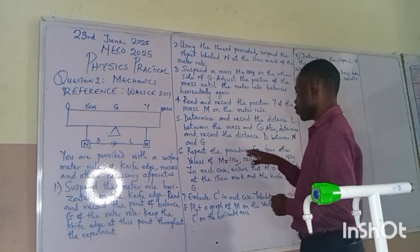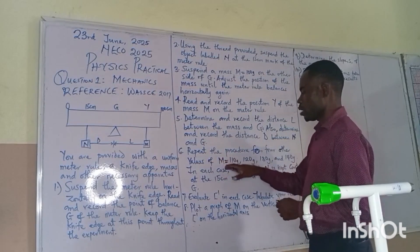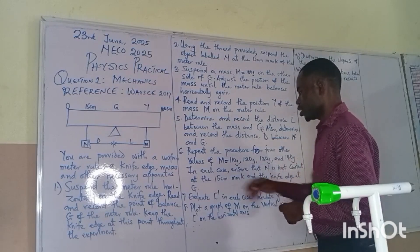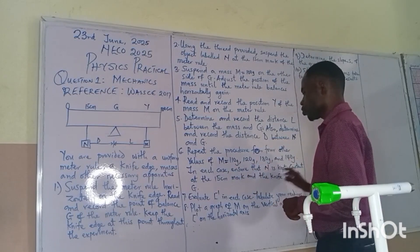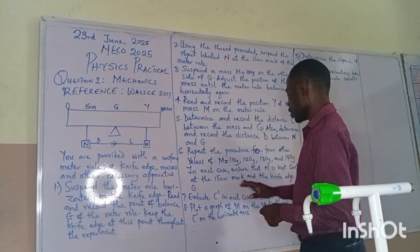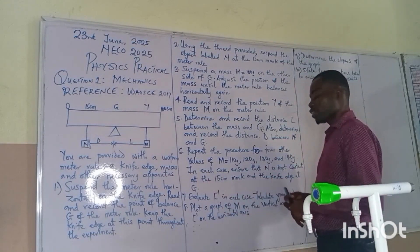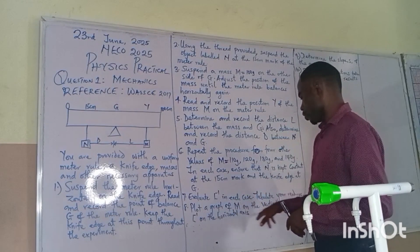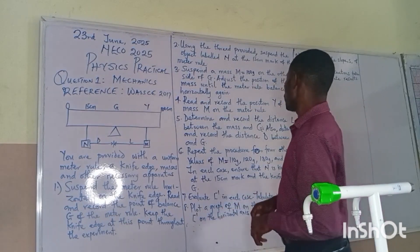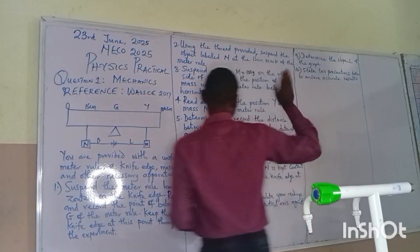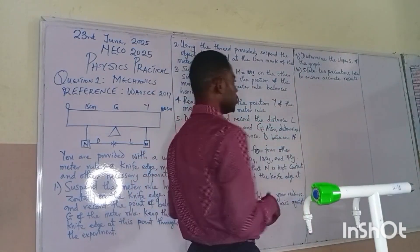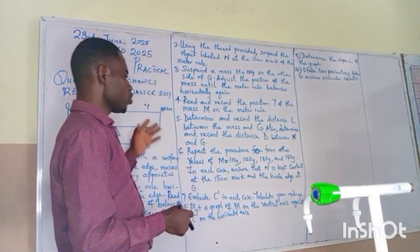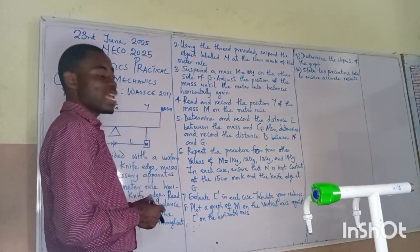Repeat the procedure for 4 other values of M equals to 110g, 120g, 130g and 140g. In each case, ensure that N is kept constant at 15cm mark and the knife edge at G. Evaluate the inverse of L in each case. Tabulate your readings. Plot the graph of D on the vertical axis against L inverse on the horizontal axis. Determine the slope and state the precautions. These are the structures you are going to follow in this video to perfect or to carry out this experiment.